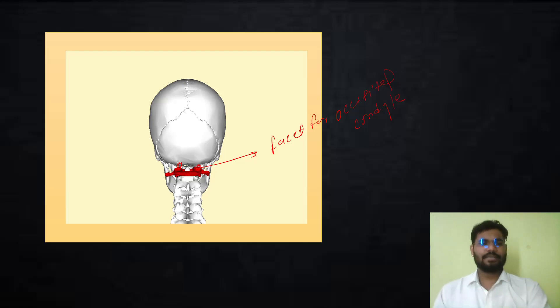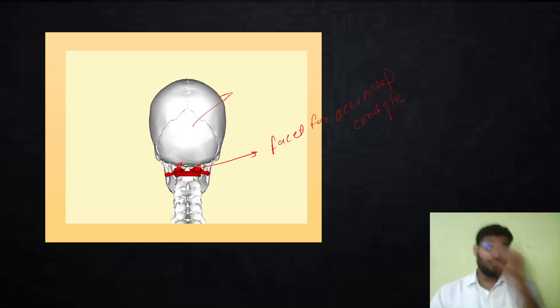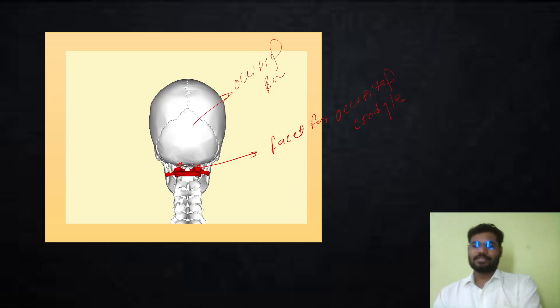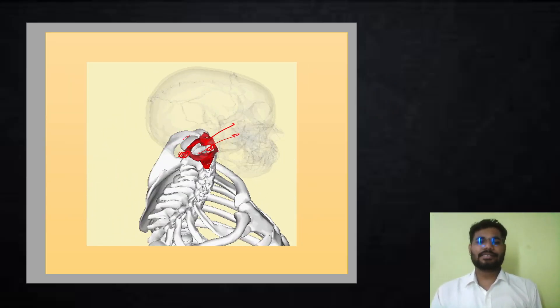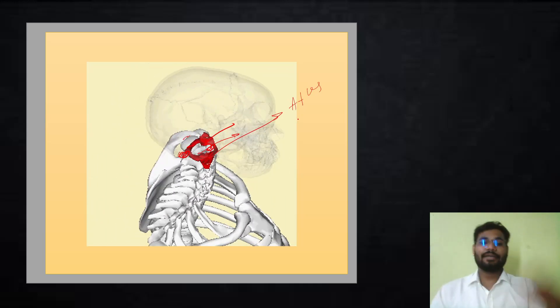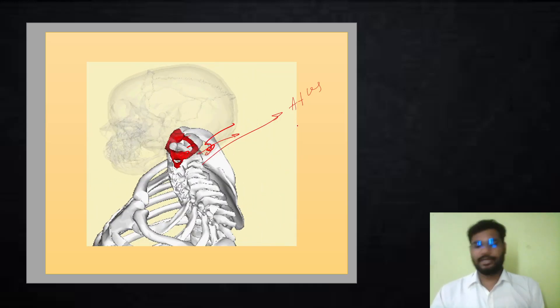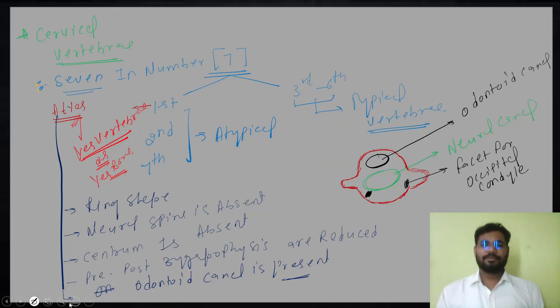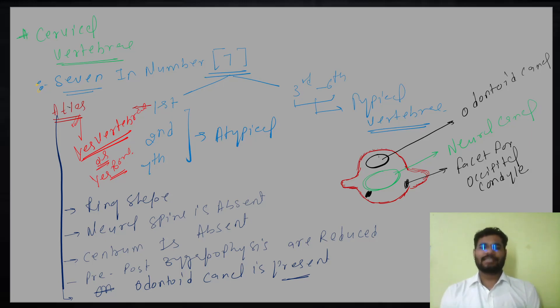Next, we will talk about the axis vertebra. I hope I have made myself clear up to this point. I have shown you the skull, the occipital bone, and how the atlas holds the head. Let us see you in the next session. Thank you.